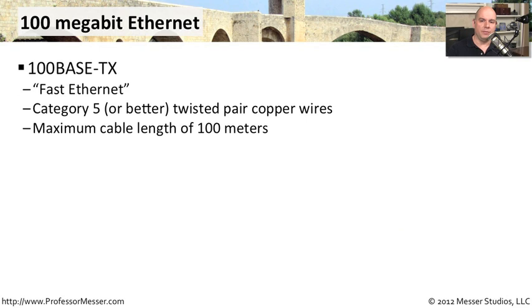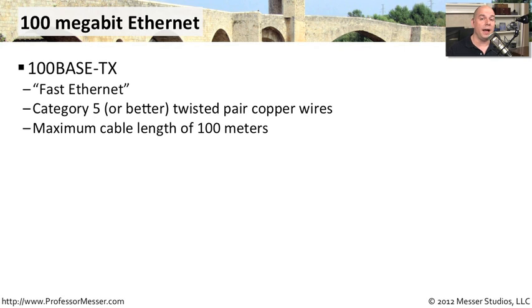10 megabits wasn't enough, so we moved up to 100-megabit Ethernet. One of the most popular standards was 100BaseTX, also called Fast Ethernet. At the time, that was a 10-times increase in speed — going from 10 megabits to 100 megabits. Because the speeds were higher, there were also higher cabling requirements, and that's where Category 5 was created, with better twists and better copper so we could still maintain that 100-meter distance.